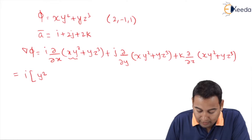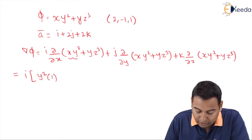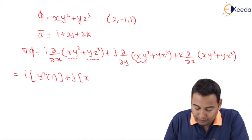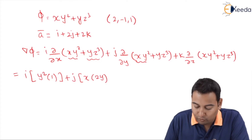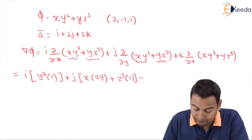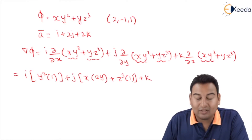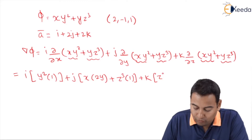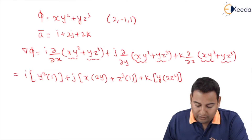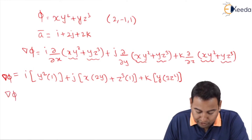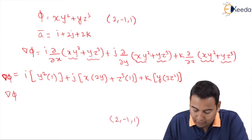With respect to x: y² is constant, so the derivative is y²; the yz³ term gives 0. With respect to y: x is constant so we get 2xy, and z³ is constant so the y derivative of yz³ is z³. With respect to z: xy² gives 0, and y is constant so the derivative of yz³ is 3yz².